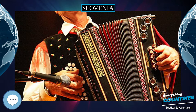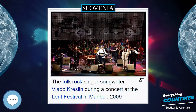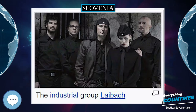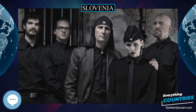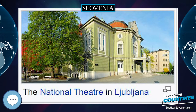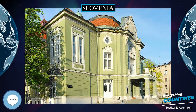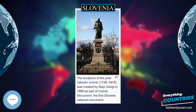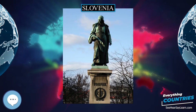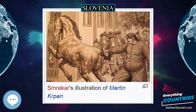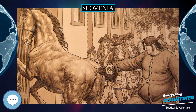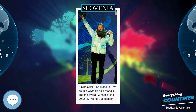Slovenia is situated in central and southeastern Europe, touching the Alps and bordering the Mediterranean. It lies between latitudes 45 and 47 degrees north and longitudes 13 and 17 degrees east. The 15th meridian east almost corresponds to the middle line of the country in the west-east direction. The geometrical center of the Republic of Slovenia is located at coordinates 46 degrees 7 minutes 11.8 seconds north and 14 degrees 48 minutes 55.2 seconds east, in Slivna in the municipality of Litija. Slovenia's highest peak is Triglav at 2,864 meters (9,396 feet), and the country's average height above sea level is 557 meters (1,827 feet).